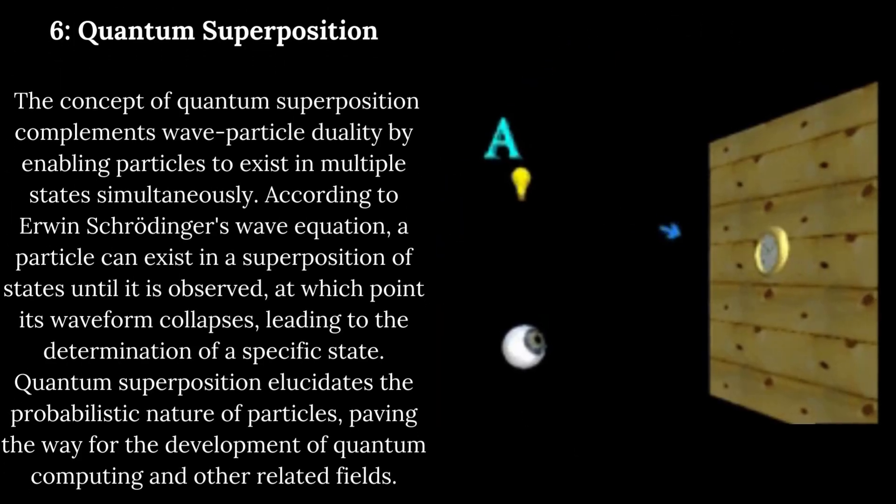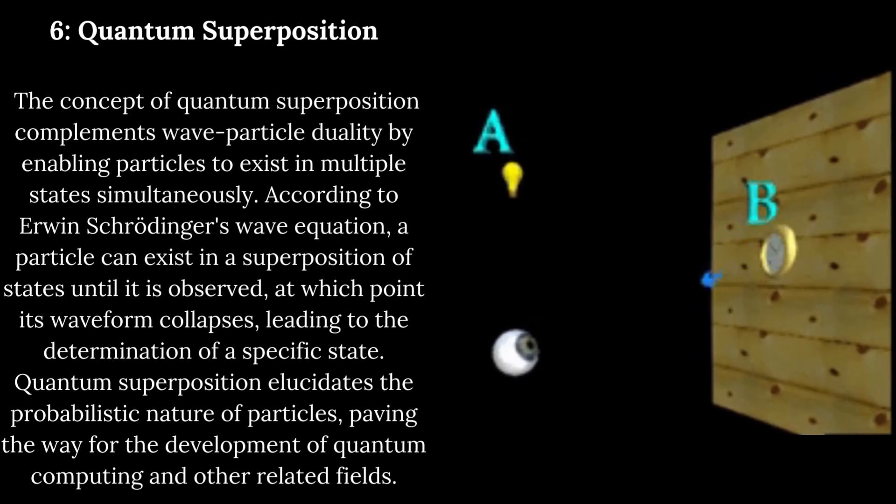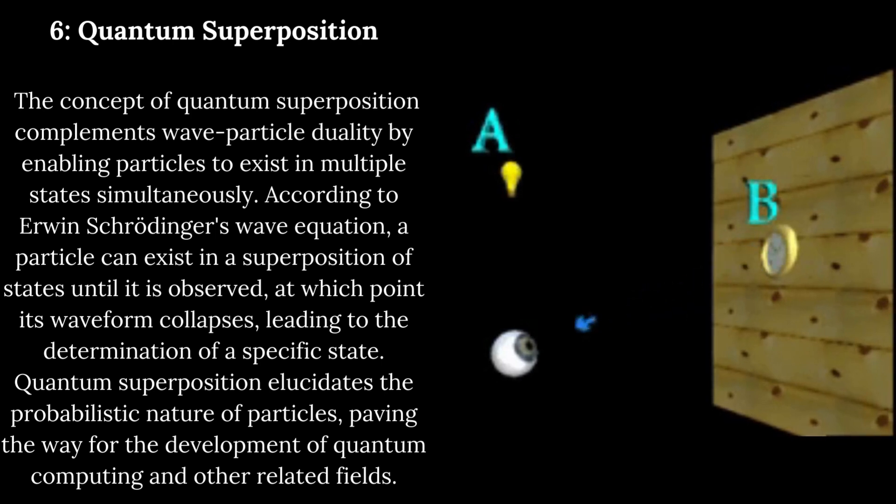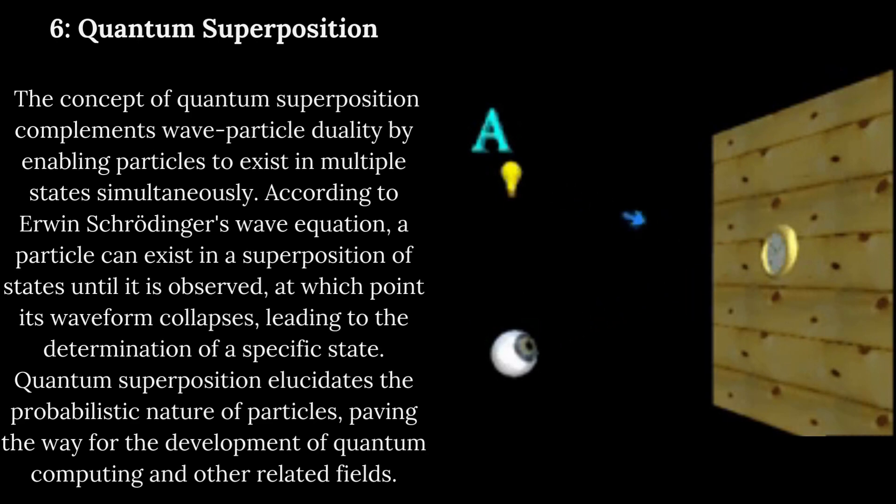Quantum superposition. The concept of quantum superposition complements wave-particle duality by enabling particles to exist in multiple states simultaneously. According to Erwin Schrödinger's wave equation, a particle can exist in a superposition of states until it is observed, at which point its waveform collapses, leading to the determination of a specific state. Quantum superposition elucidates the probabilistic nature of particles, paving the way for the development of quantum computing and other related fields.